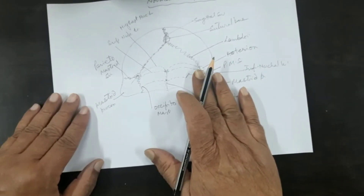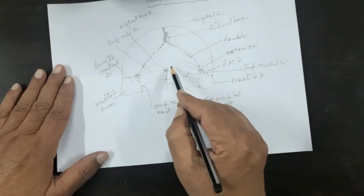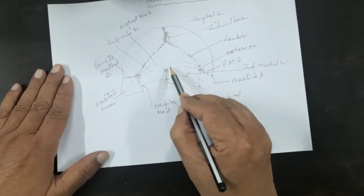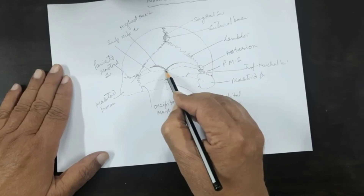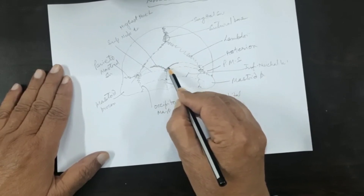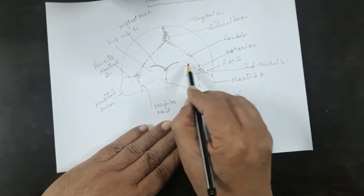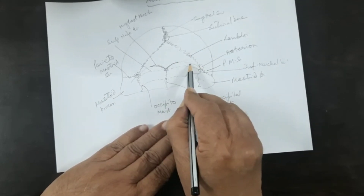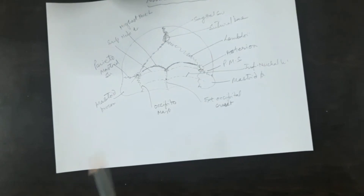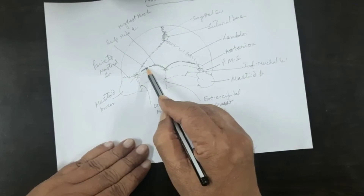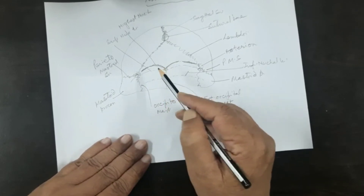Let us see what soft tissue is attached to the Norma Occipitalis. To the highest nuchal line there is the attachment of an aponeurosis on both sides, extending on either side of the external occipital protuberance — this is the epicranial aponeurosis, the part of the scalp, an aponeurotic fibrous tissue layer. On either side of that is the origin of a thin muscle called occipitalis, which originates on the highest nuchal line laterally.